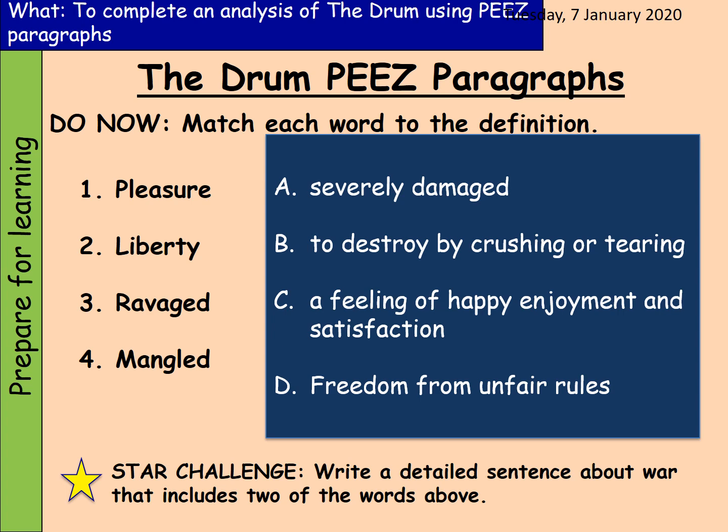So, number one — pleasure — you should have matched it with C: a feeling of happy enjoyment and satisfaction. Two, liberty should be matched with D: freedom from unfair rules. If you have your liberty, you have your freedom.